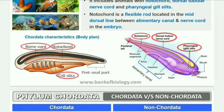Presence of paired pharyngeal gill slits at some stage in life. In fish, they are present as gills. But in other chordates, they are present in the embryonic stage only.